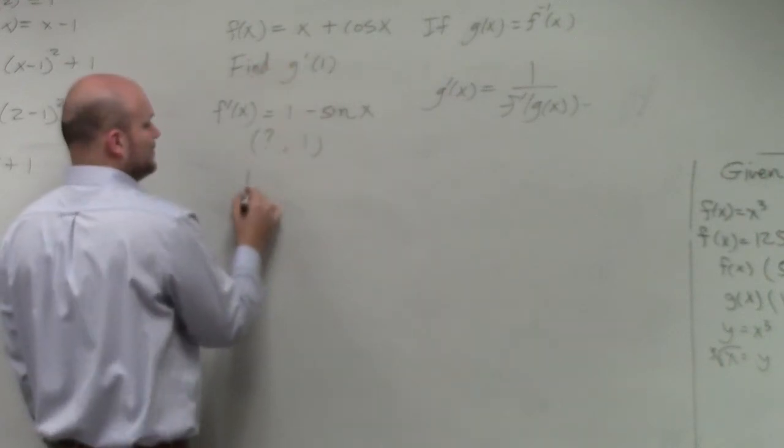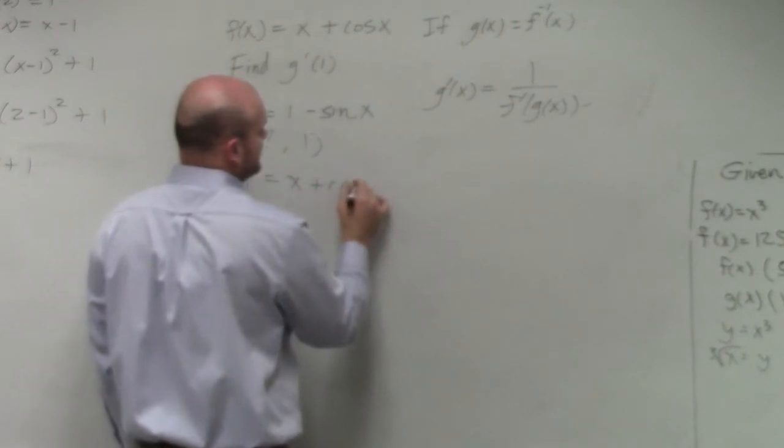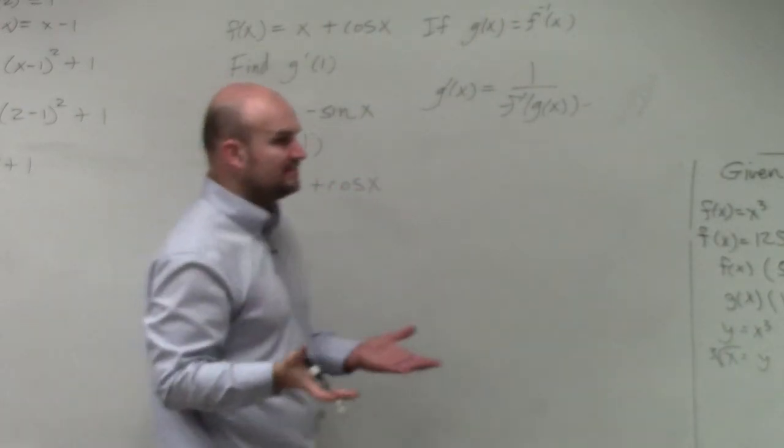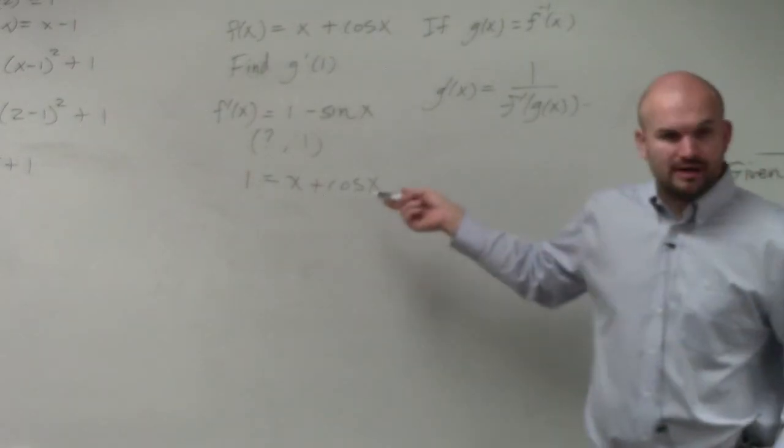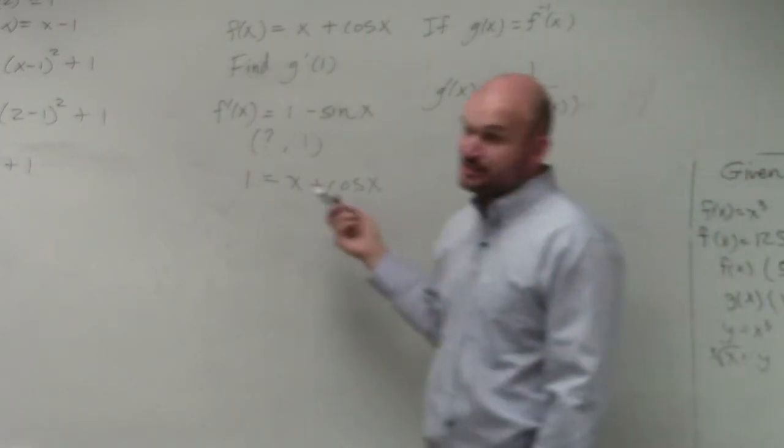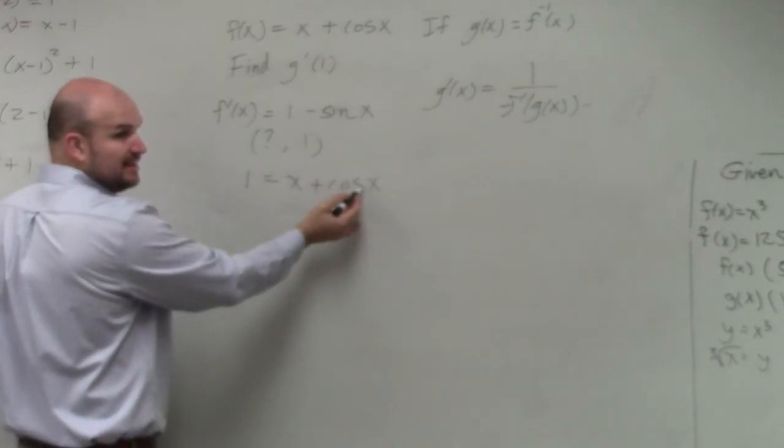Well, if I replace 1 with f of x as the output, x plus cosine of x, what value could I plug in for x that's going to give me 1? And if you plug in 0, cosine of 0 is just going to be 0.